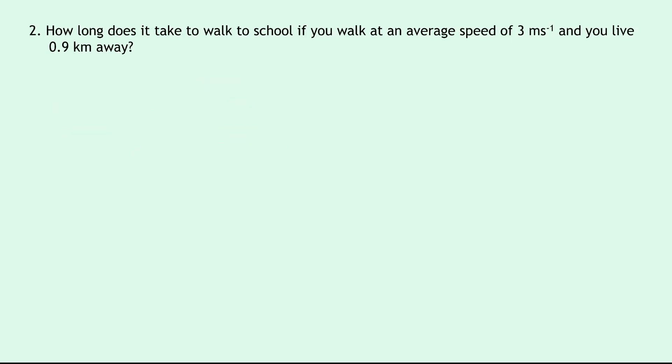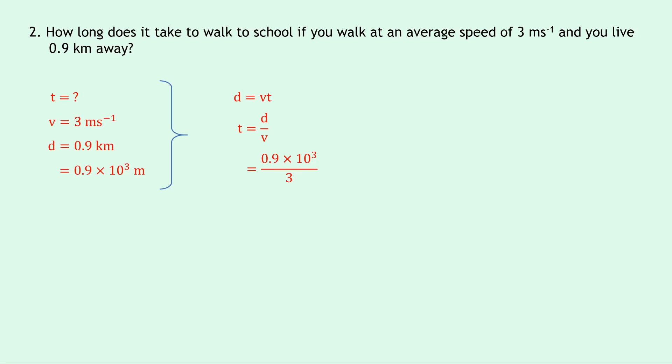Let's try that same method with question two. How long does it take to walk to school if you walk at an average speed of 3 meters per second and you live 0.9 kilometers away? Now alarm bells should be ringing that the distance is not given in meters, it's given in kilometers. Remember the k is a prefix which is kilo, so we're going to need to take that into account. We're asked to find how long does it take, so that's a time, so I'm putting time equals question mark. Our speed is 3 meters per second and our distance is 0.9 kilometers, but remember we said we're going to need to change that into meters. So this becomes 0.9 times 10 to the power of 3 meters because kilo is times 10 to the 3. Same as before, writing down our equation to start with d equals vt, we can then rearrange our equation for t. So this becomes t equals d over v, which when we plug in the numbers becomes 0.9 times 10 to the power of 3 divided by 3, and putting that into your calculator should give you an answer of 300 seconds.